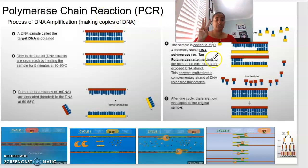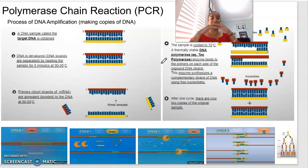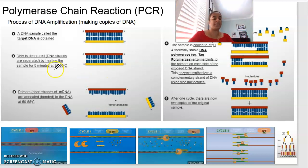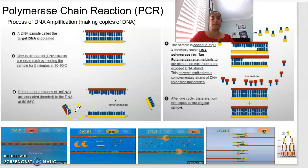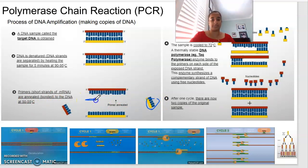PCR is split into three major steps. First, once we have our double-stranded DNA, we want to separate the two strands from one another — we denature the DNA by heating it to about 90 to 95 degrees, where the two strands separate. The next step is where primers are added. Primers are short strands of mRNA that are annealed to the DNA — called the annealing stage — happening at 50 to 55 degrees.